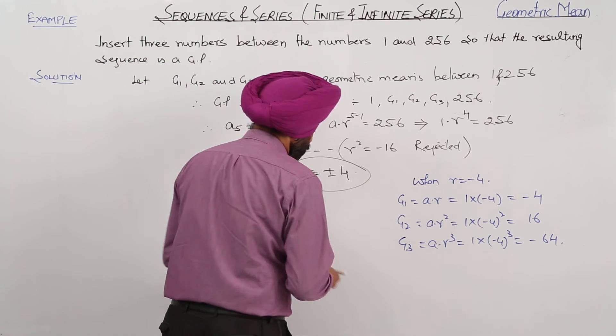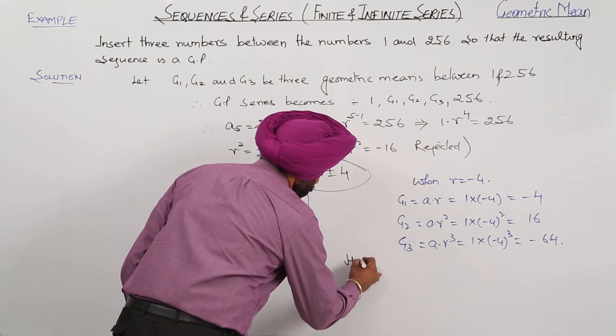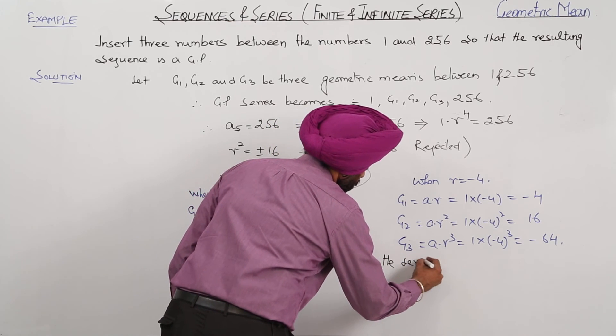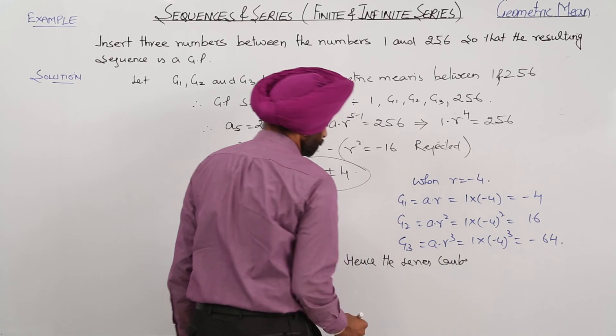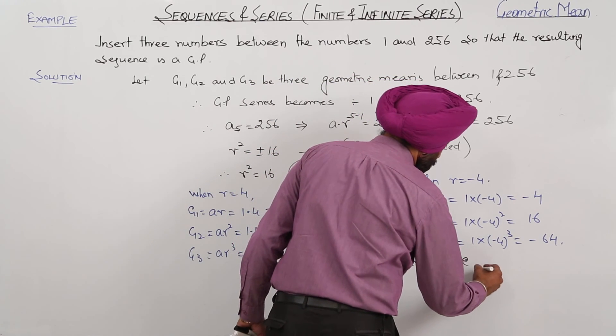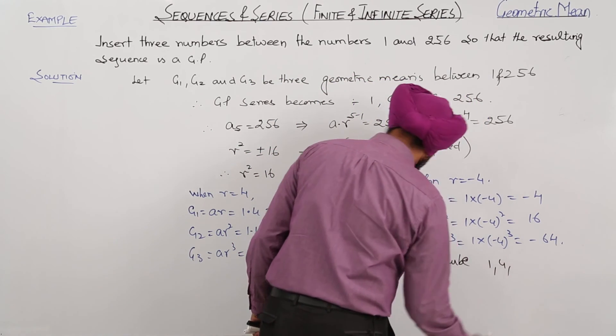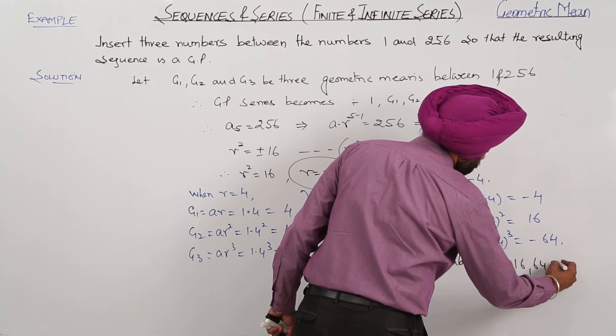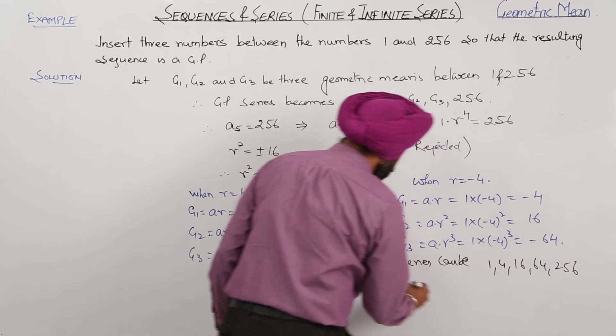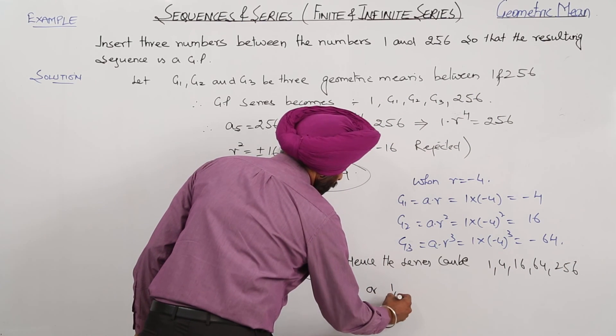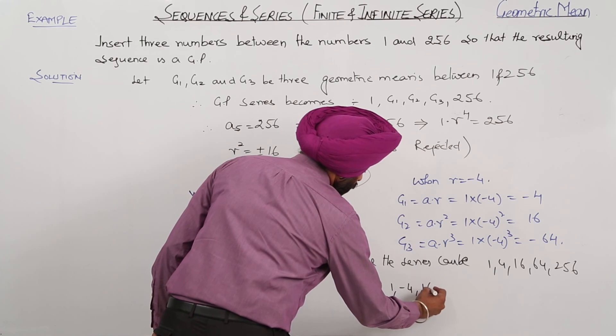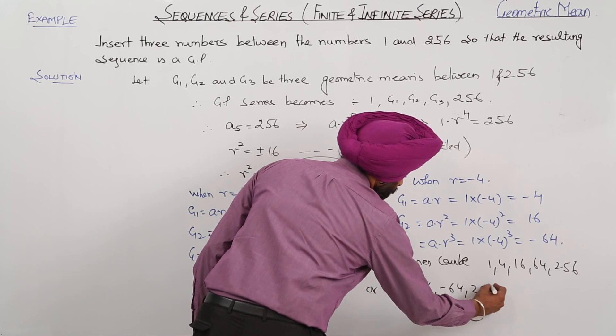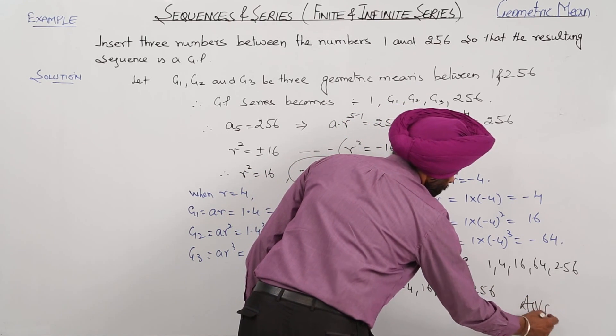Hence, the series can be 1, 4, 16, 64, 256, or 1, negative 4, 16, negative 64, 256. So this is the answer.